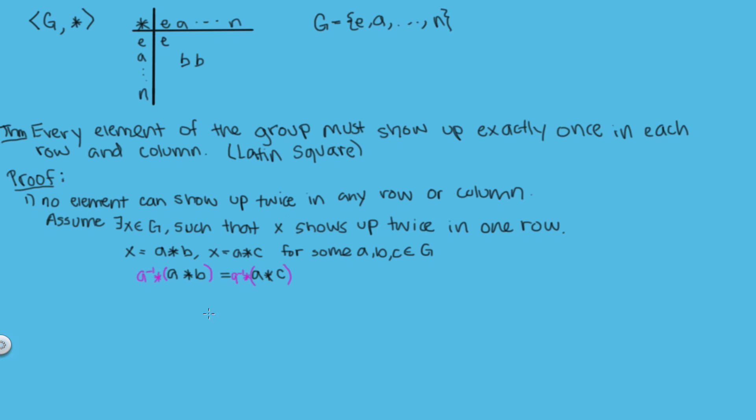But since we know that star is associative since we're working with a group, that tells us that a inverse star a star b equals a inverse star a star c. And then this just tells us that b equals c. But this is a contradiction. So we have shown that no element can show up twice in any row or column.